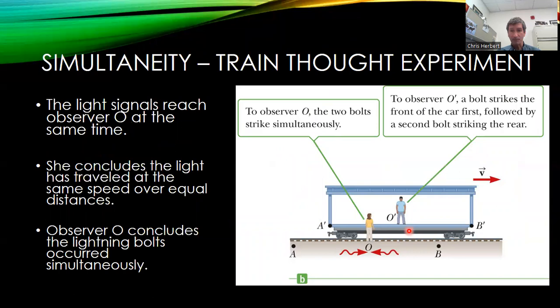O prime however, has already passed the position of O when the two bolts hit the front and back car. So the light traveling from the front of the car had a shorter distance to reach O prime and therefore O prime sees the bolt of lightning strike the front of the car first and the back of the car afterward.